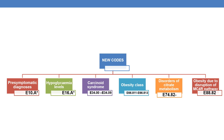The first code that has been added is presymptomatic type 1 diabetes, which comes under E10.A. This is further expandable. The next is hypoglycemia levels, which come under E16.A. This code is also further expandable.